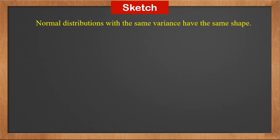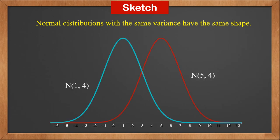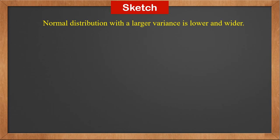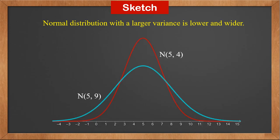Variance determines the spread, so normal distributions with the same variance have the same shape. Looking at N(1, 4) and N(5, 4), their centers are different — one at 1, the other at 5 — but the shapes are exactly the same because their variances are the same. A distribution with a larger variance spreads out more. Since the area underneath the curve is always 1, if it spreads wider, its height must be lower. Therefore, a normal distribution with a larger variance is lower and wider. Comparing N(5, 4) and N(5, 9), their centers are the same, but one spreads out wider and its height is also lower. So when sketching two normal distributions, pay attention to both the mean and the variance: the mean decides the center, and the variance decides the height and spread.